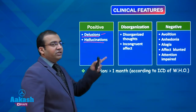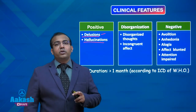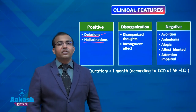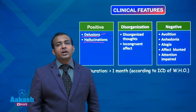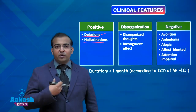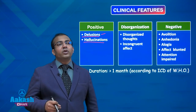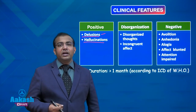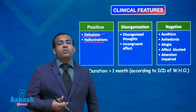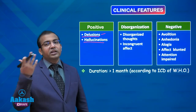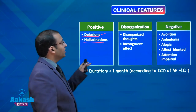Then there can be hallucinations, which are perceptual disorders in any sensory modality. The most important hallucinations in schizophrenia are auditory hallucinations. These can be voices talking about the patient, voices commenting on the patient's actions, voices that are derogatory and threatening, or voices talking about the patient's thoughts specifically. A whole lot of hallucinatory phenomena will be seen in patients with schizophrenia.